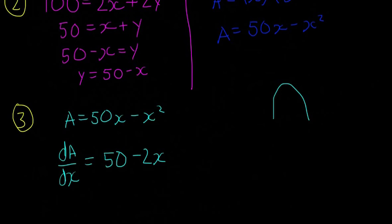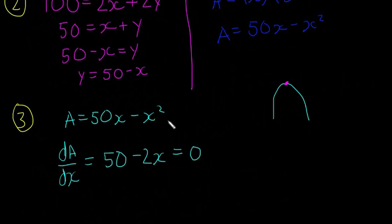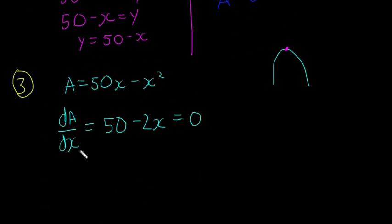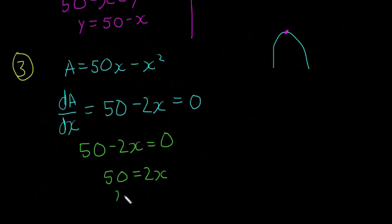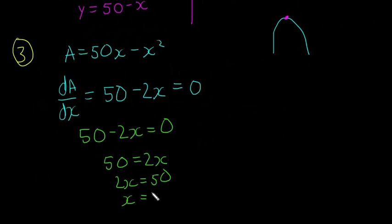To find the maximum area, we look at the curve — we want the turning point at the top. To find a local maximum we set the derivative equal to zero: dA/dx equals zero, so 50 minus 2x equals zero. Solving: 2x equals 50, therefore x equals 25.